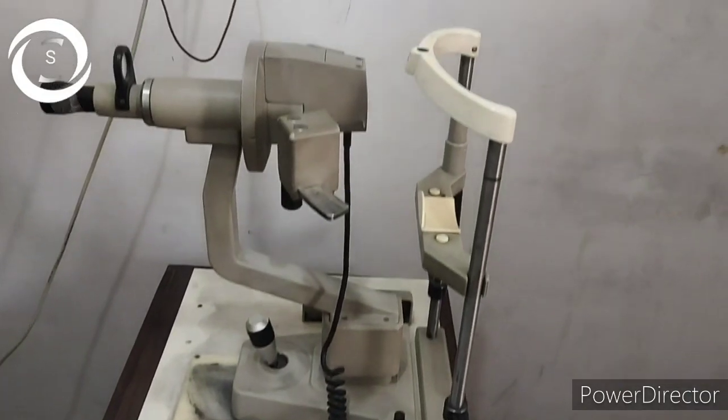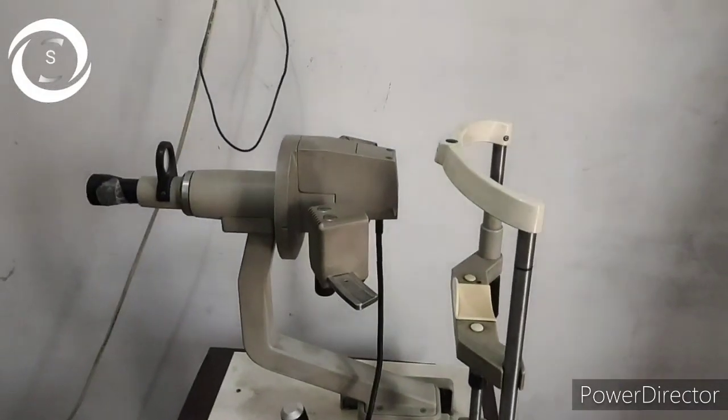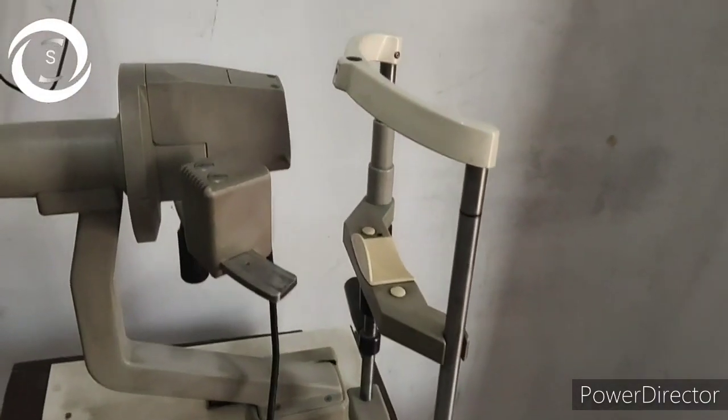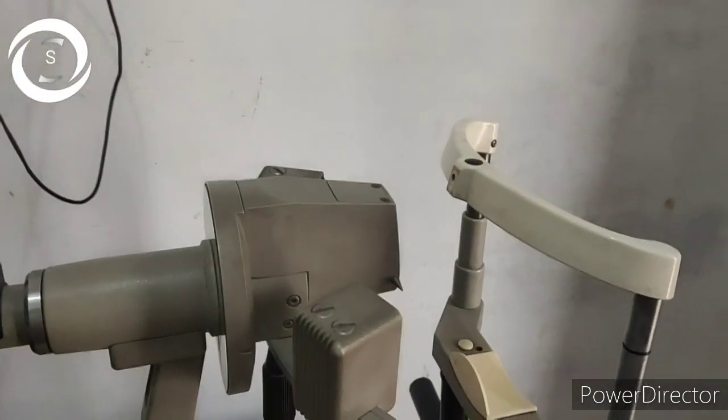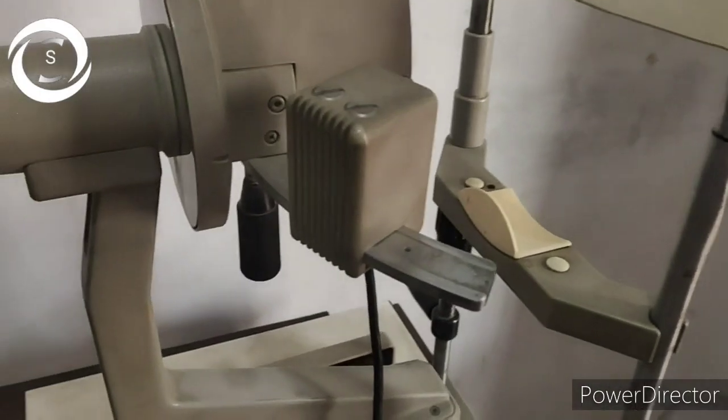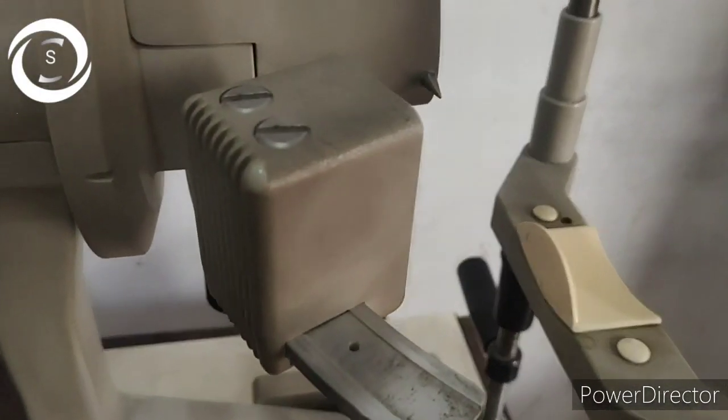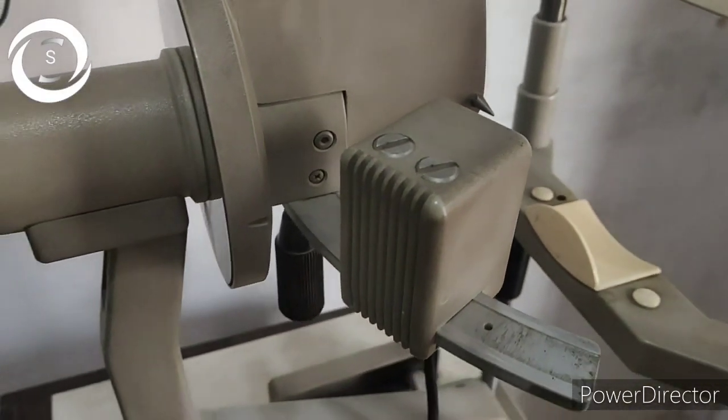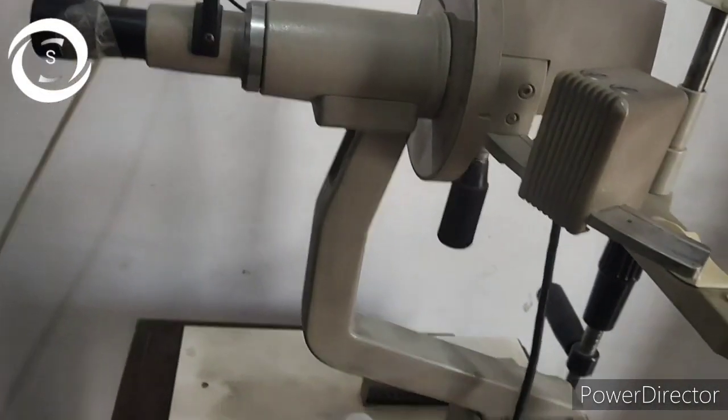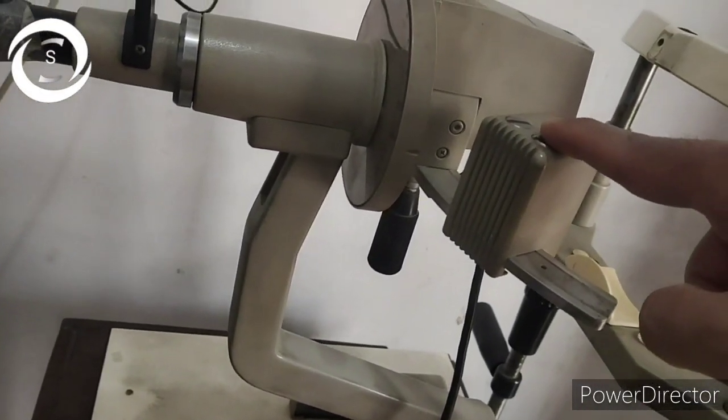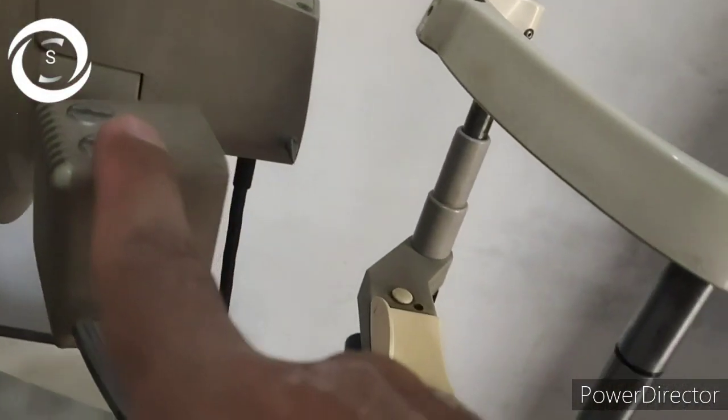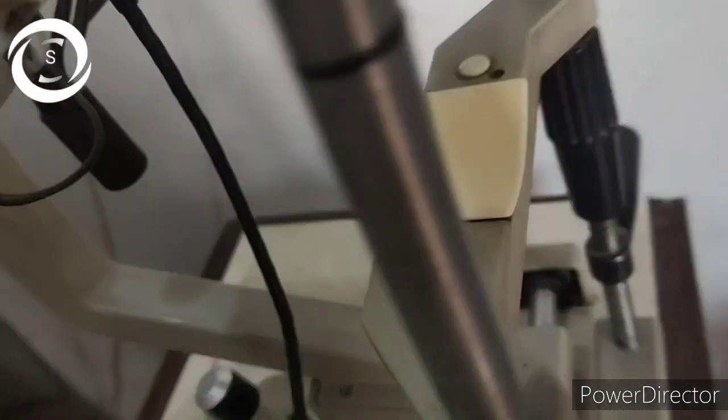Now this is Javal-Schiotz manual keratometer and you can see the chin rest, you can see the two objects and you can see the black knob. Here you can see the black knob that changes the distance between the two objects. Superiorly there is a dial in which there is axis in degrees and power in millimeters and diopters. Now these are the objects, this is one object or half part of the object.